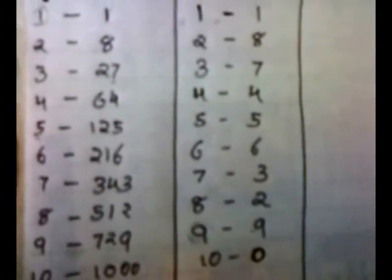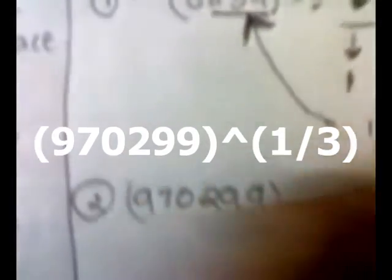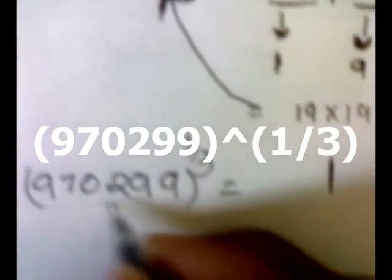See how easy this method is! Using these two tables — table number one with cubes of one to ten, and table number two with the units digits — let's take another example: 970,299. We divide it into two parts. The right-hand side contains three digits: 299, and the left-hand side is 970.